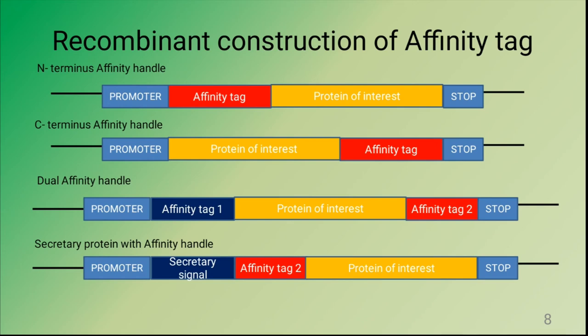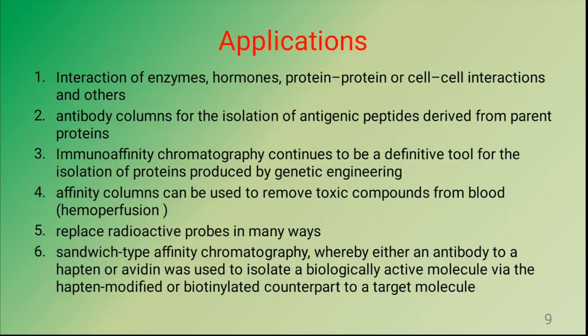Another kind of tag is the affinity tag fused with the protein combined with a secretory signal, so that the recombinant protein is secreted outside to the culture medium. We then collect the medium and use it to purify the recombinant protein.